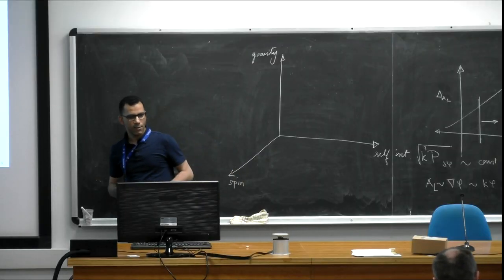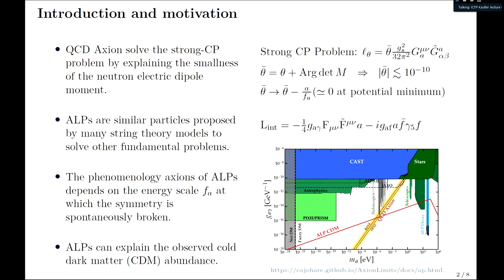The QCD axion is a Goldstone boson arising after the spontaneous breaking of the Peccei-Quinn symmetry, which was introduced to solve the strong CP problem by explaining the smallness of the neutron electric dipole moment. The strong CP problem concerns the absence of CP violation from nature, or simply why the vacuum angle theta is so small. If axions exist, their potential should dynamically drive theta to zero.